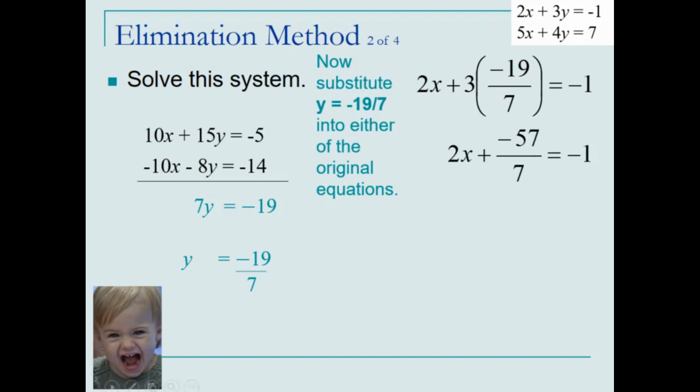Solving for x, we will add 57 sevenths to both sides. We'll have to have a common denominator, replacing our negative 1 with negative 7 over 7. We now have our common denominators that we can combine the fractions with a final result of 50 sevenths.